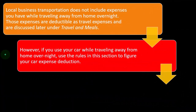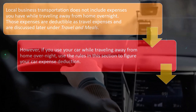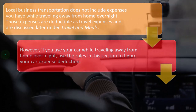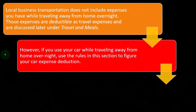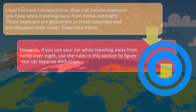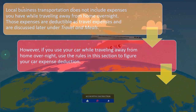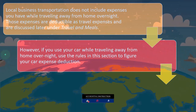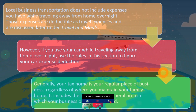However, if you use your car while traveling away from home overnight, use the rules in this section to figure your expense deduction. In other words, if you have overnight travel, you might be using some other means to get there like an airplane or a bus, but if you're using your car, you might be able to track the mileage in a similar fashion as we would discuss in our QuickBooks system.